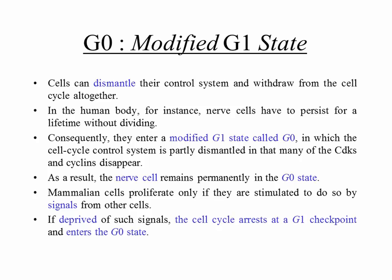Not all cells have to keep undergoing the cell cycle all the time. Cells can dismantle their control system and withdraw from the cell cycle altogether. In the human body, for example, nerve cells have to persist for a lifetime without dividing — that is why spinal injuries cause paralysis with today's technology, because we don't know how to regenerate those nerve cells. Cells of this type enter a modified G1 state called G0, in which many cyclin-dependent kinases and cyclins disappear. As a result, the nerve cell remains permanently in the G0 state.